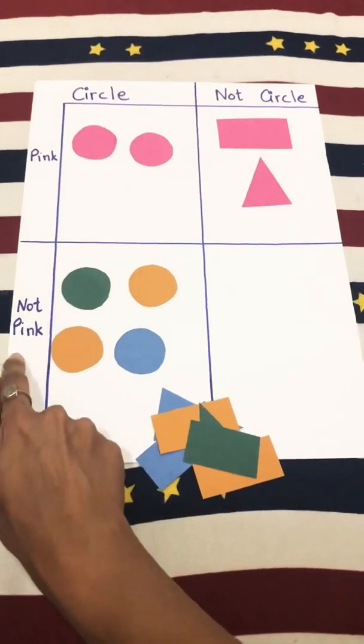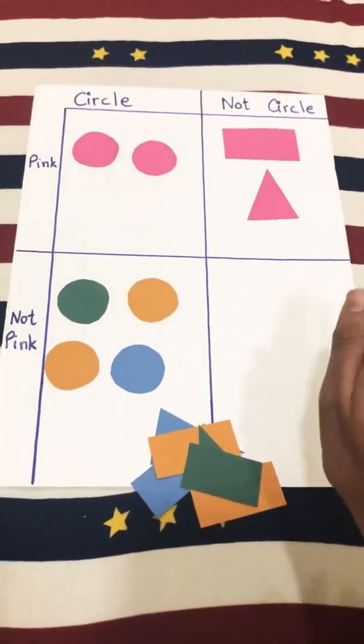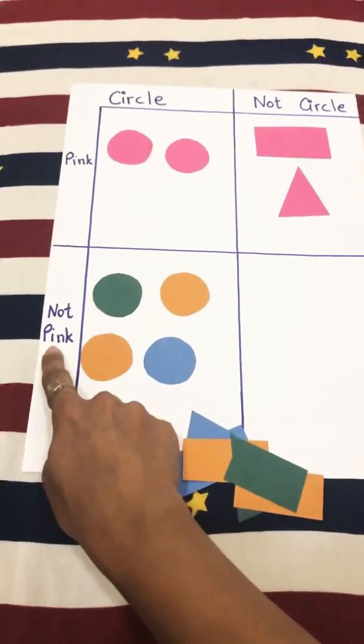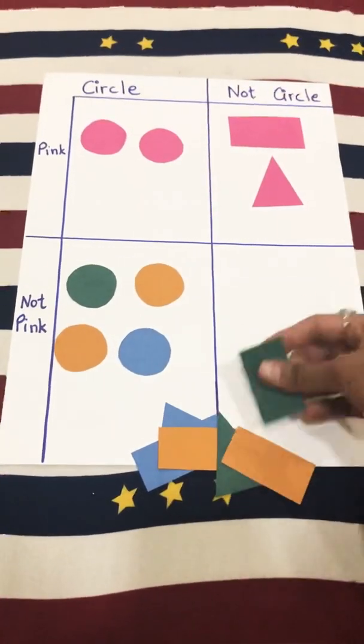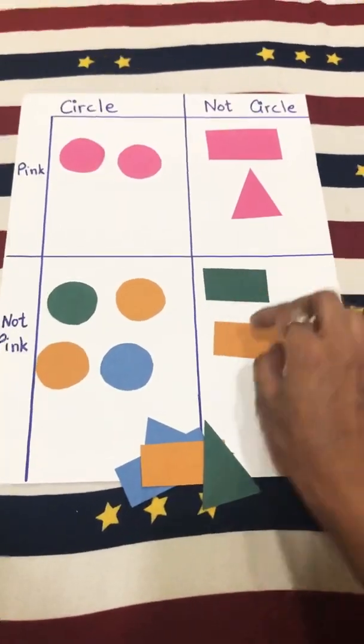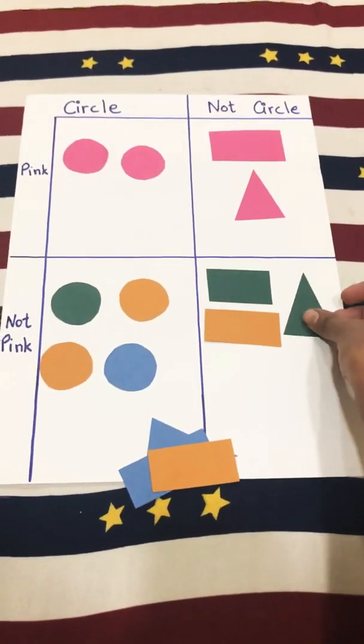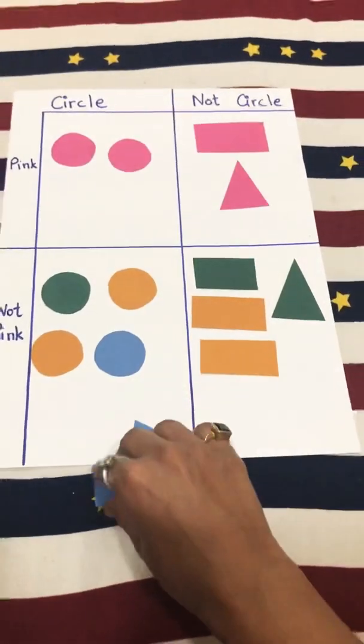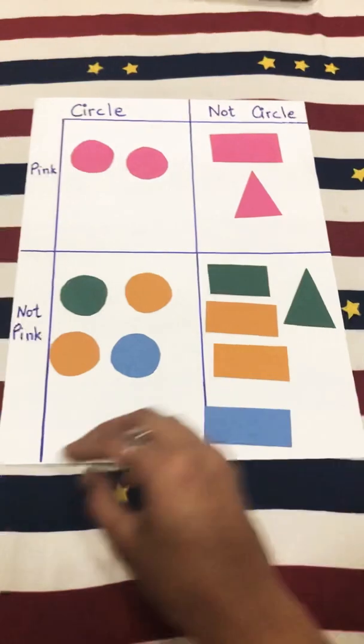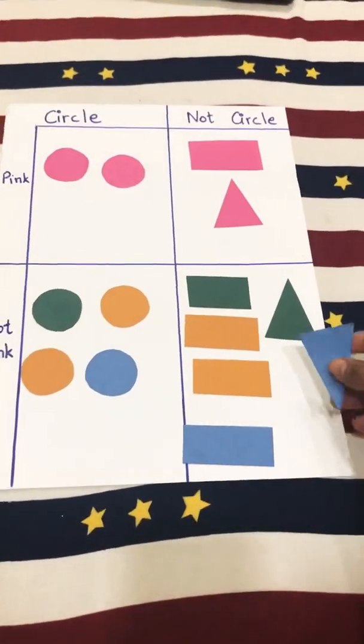The next says 'not pink and not circle.' So the shapes that are neither pink nor circles will be put here. So I have one rectangle. Next, I have a triangle here—rectangle, rectangle, and another triangle.